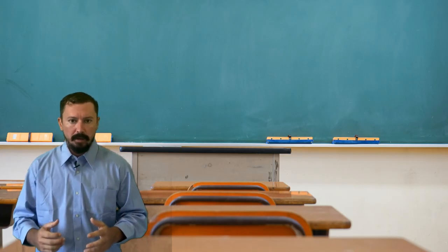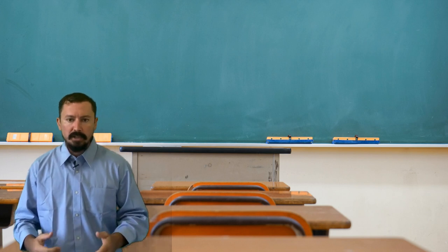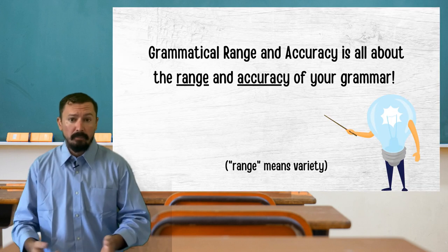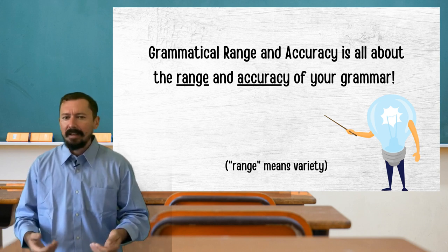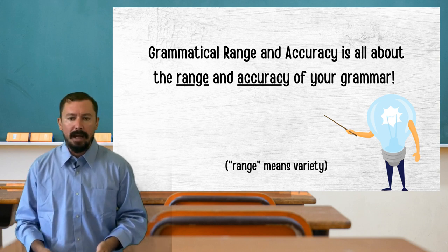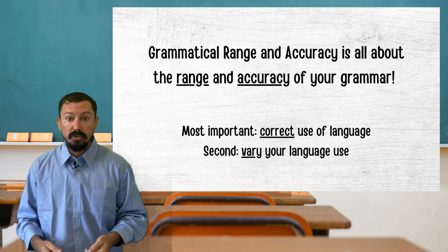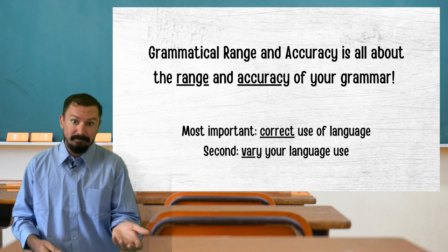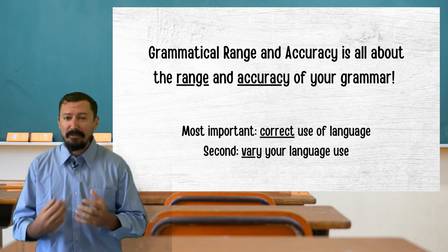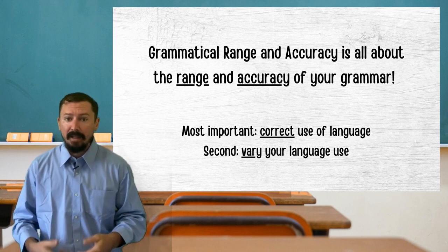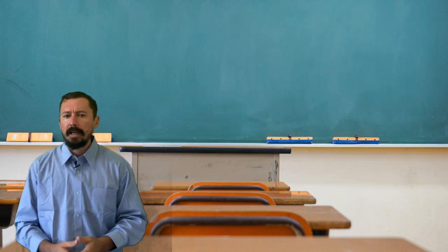The first three criteria have mildly confusing names. Grammatical range and accuracy is really very obvious — it is about both range and accuracy. This means your essay should use grammar in a correct way; that's accuracy. But it should also use different structures; that's range. You don't have to go completely over the top and use every single verb tense, clause and sentence type that your English teacher ever taught you, but it's best not to sound repetitive.